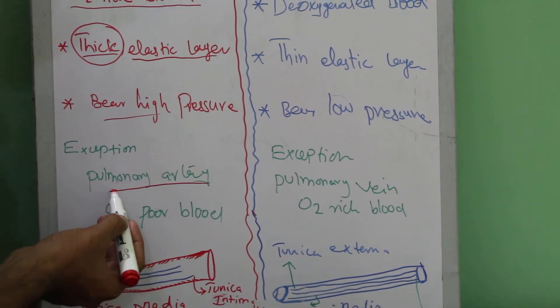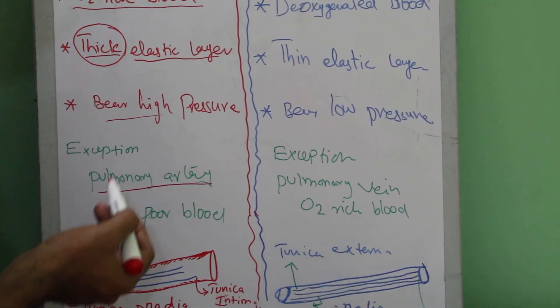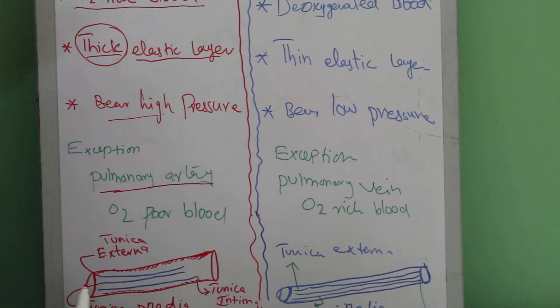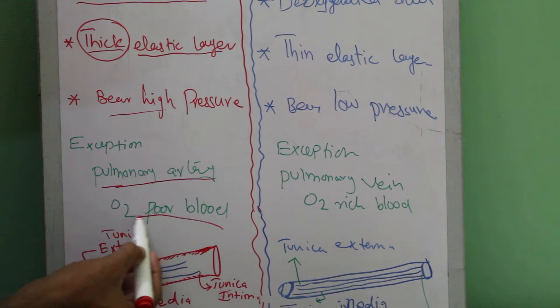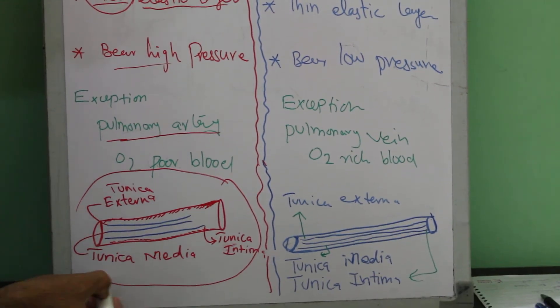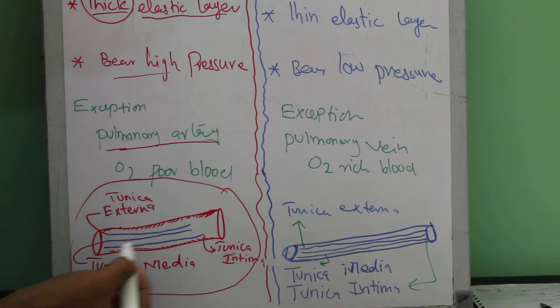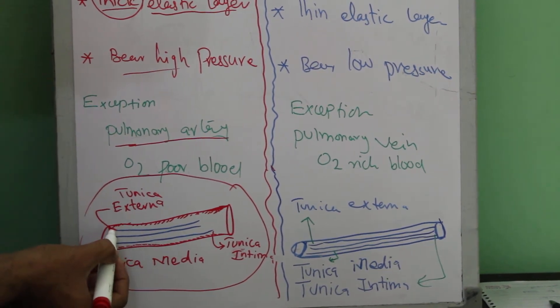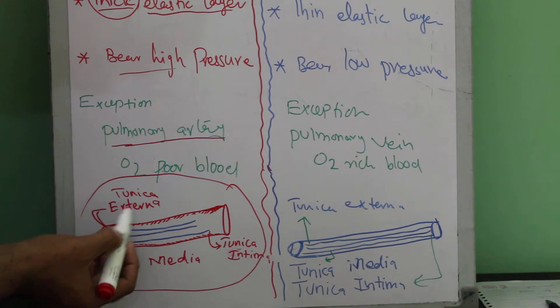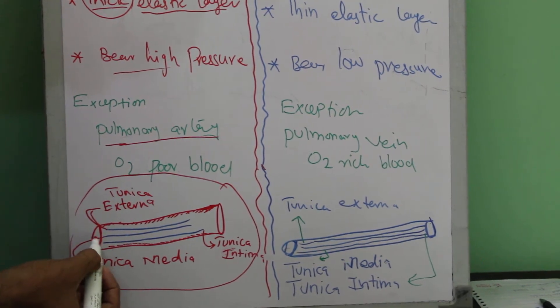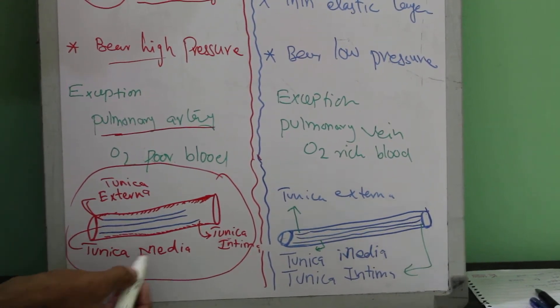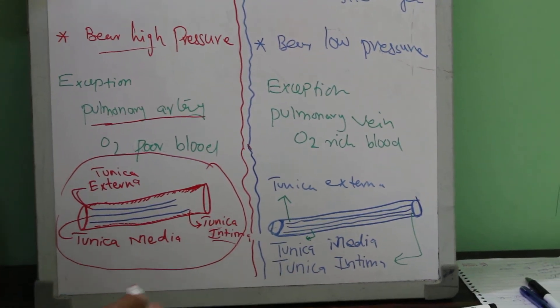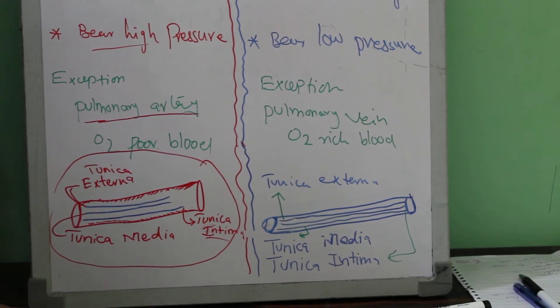Now this is the structure of an artery. This is the exact structure of an artery. It has got three layers: the outermost layer is tunica externa, the middle layer is tunica media, and the innermost layer is tunica intima. Now let's see the difference for veins.